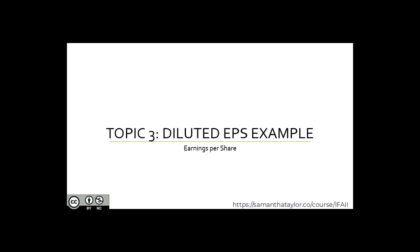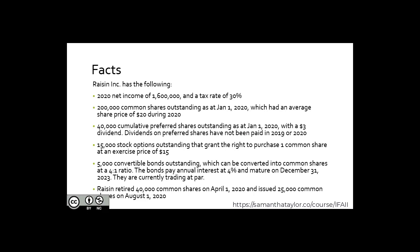Diluted EPS, an example. Raisin Inc. has the following: a 2020 net income of $1.6 million and a tax rate of 30%, 200,000 common shares outstanding as at January 1st, 2020, which had an average share price of $20 during 2020.